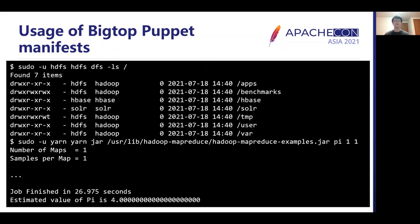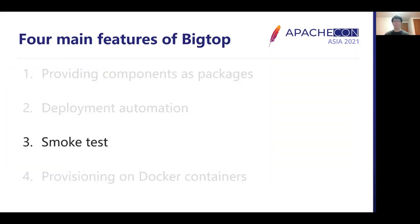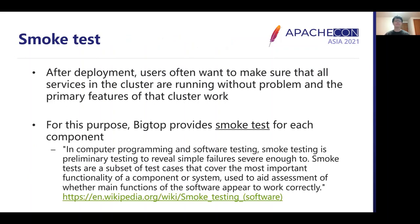This is only an example of executing HDFS and YARN commands on the deployed cluster. The third feature of Big Top is smoke testing. Now we understand we can build a cluster almost automatically using Big Top's packages and Puppet manifests, but that's not sufficient. Once we deploy the Hadoop cluster, we usually want to make sure it was successfully deployed without problems. Big Top's smoke test is for this purpose — it runs the basic functionalities of components so that we can ensure they are properly deployed.